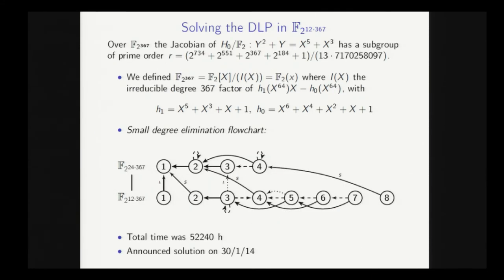So let's give a couple of details here. So this is the genus 2 hyperelliptic curve, supersingular. We take this representation for the degree 367 extension, so notice we're using the alternate polynomial here, where q is 2 to the 6 rather than 2 to the 12, which makes the descent much faster.